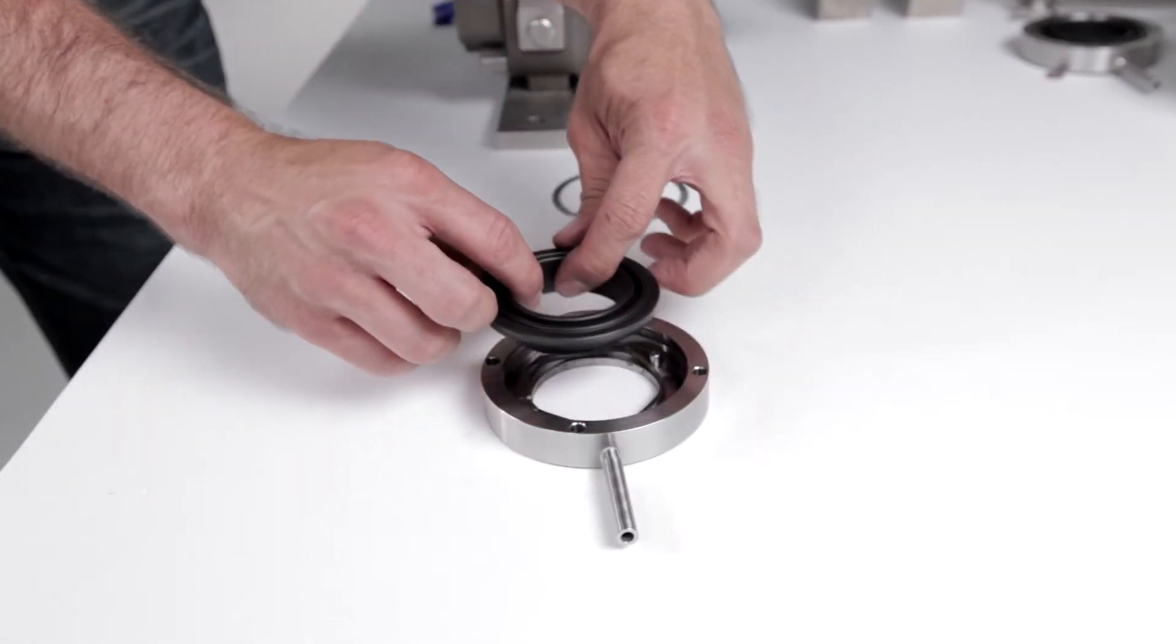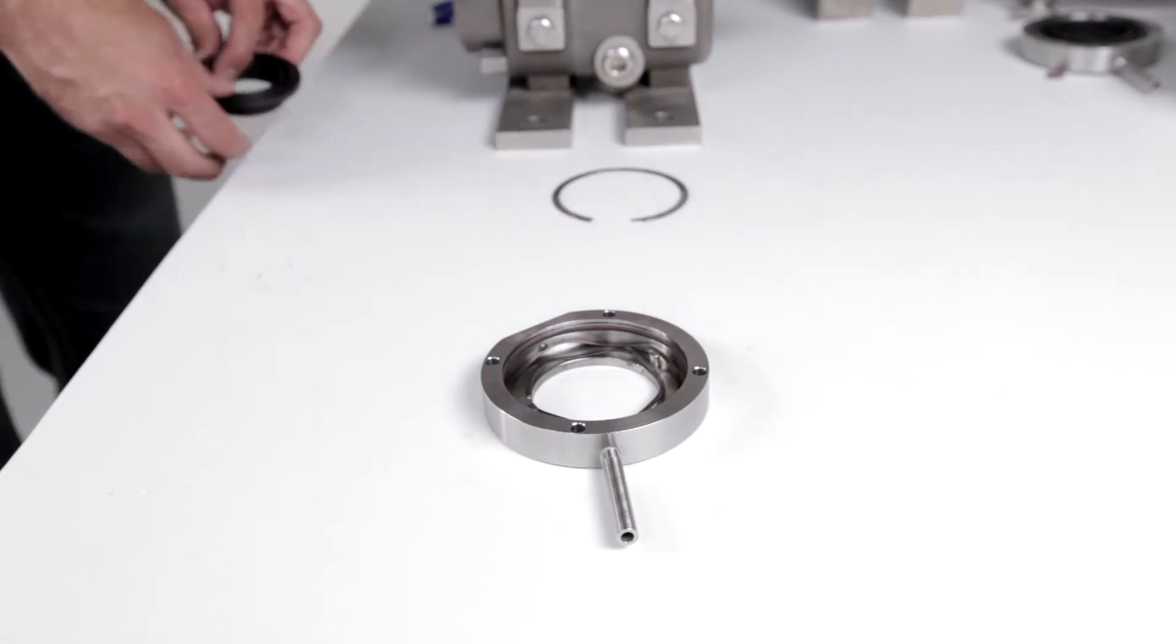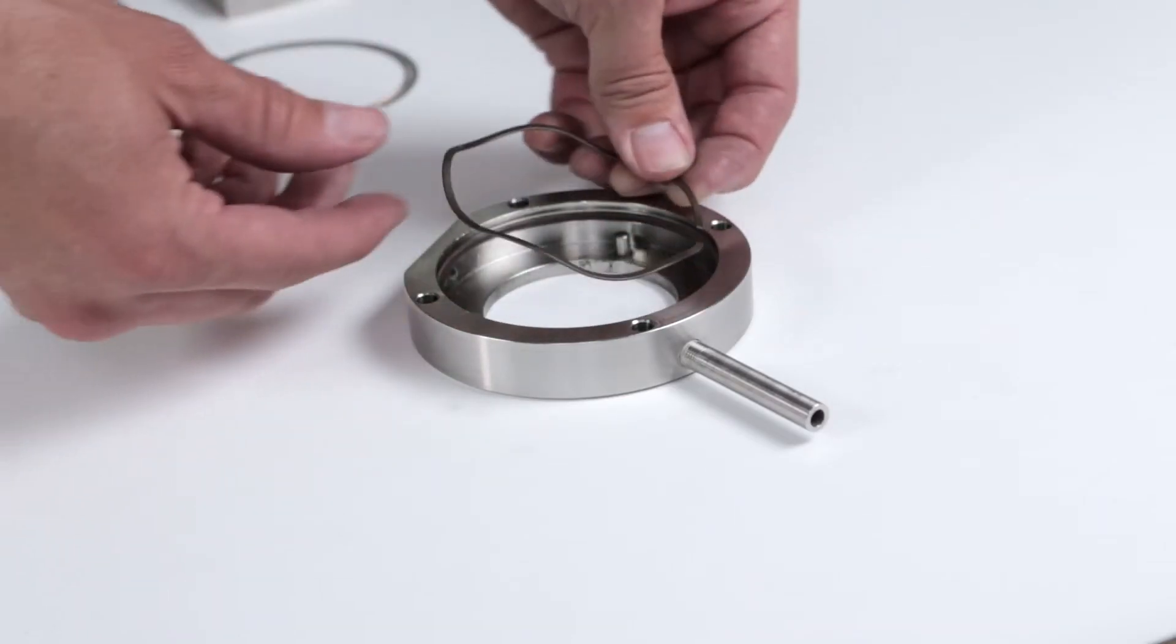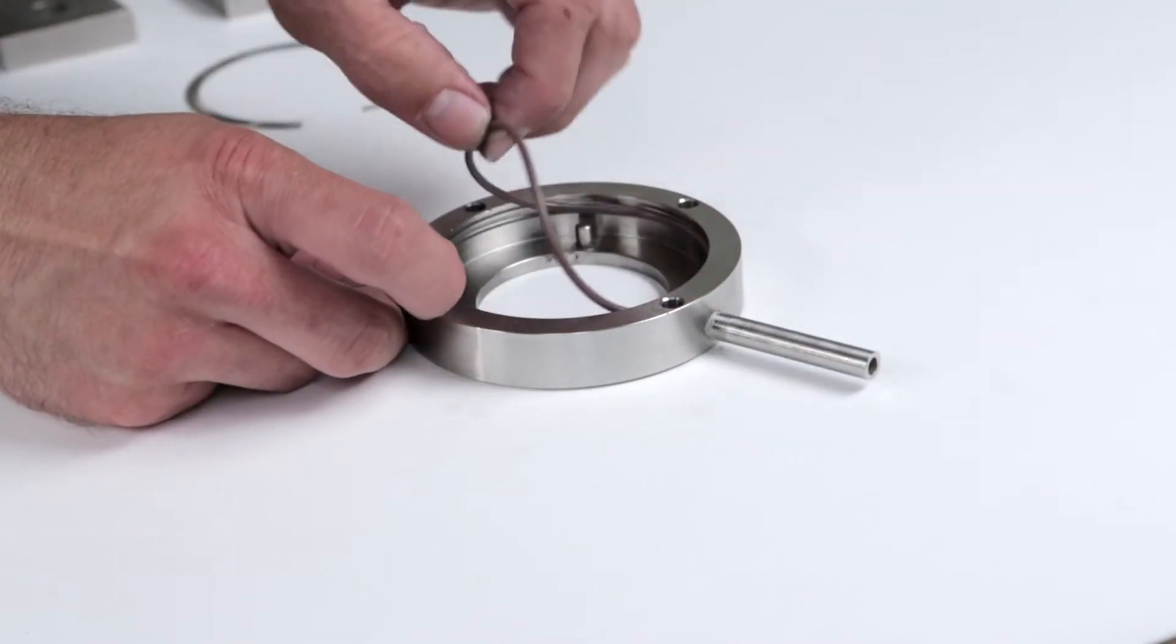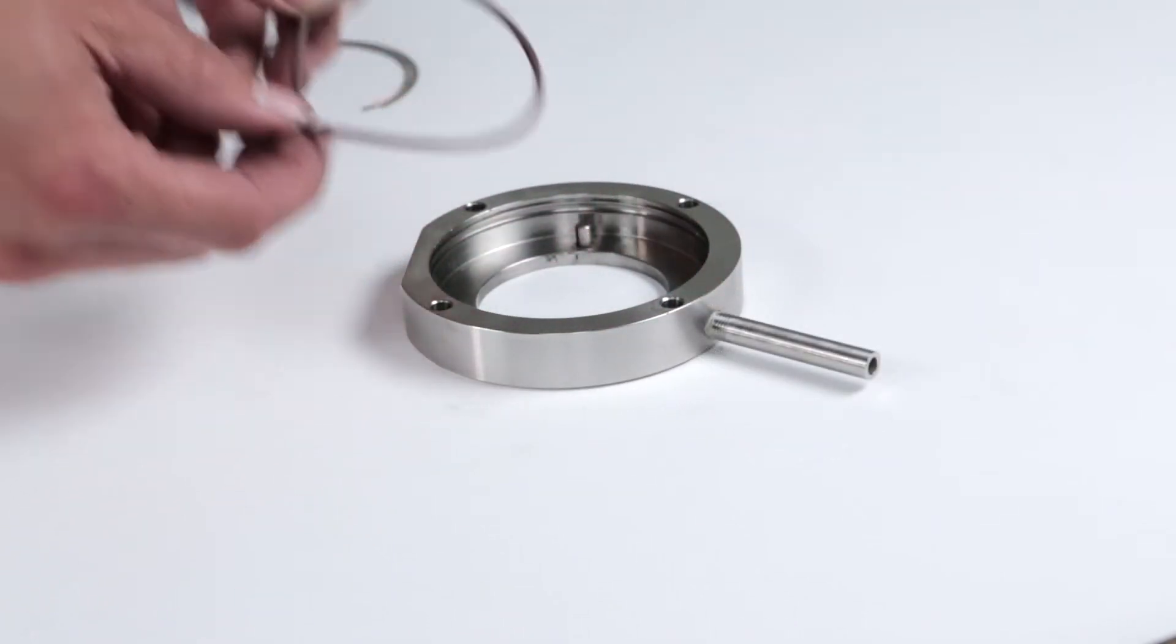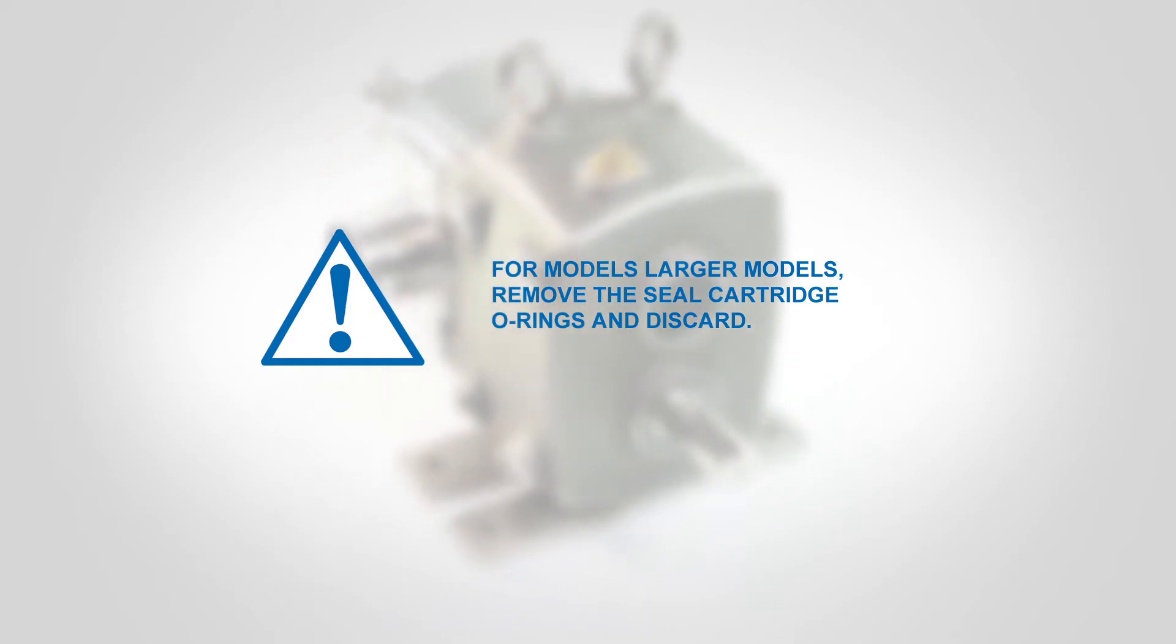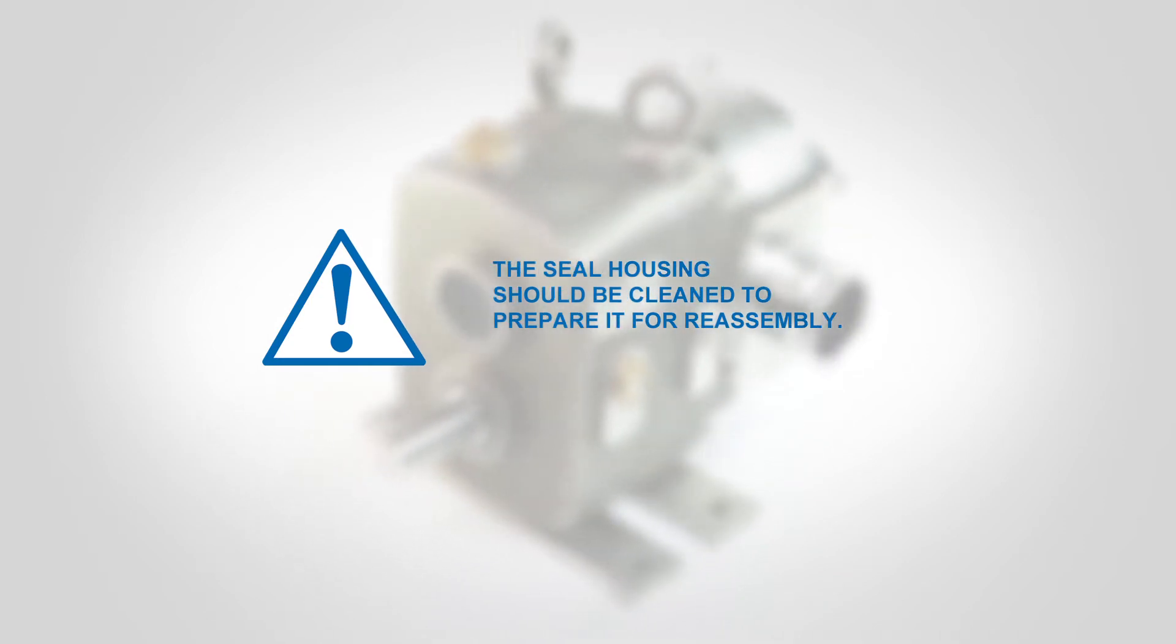Use your fingers to gently press the two seal elements out of the seal housing. Remove the double and single seal springs. Remove the outer seal o-ring. Discard all elements of the seal except the cartridge housing and pins. For larger models, remove the seal cartridge o-rings and discard. The seal housing should be cleaned to prepare it for reassembly.